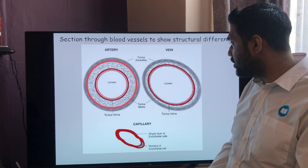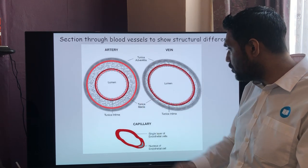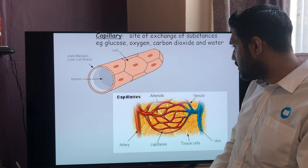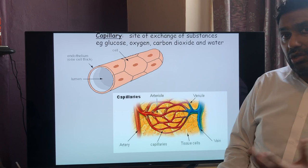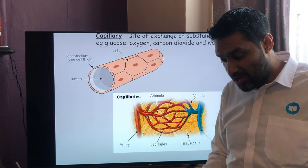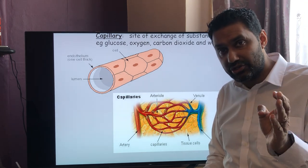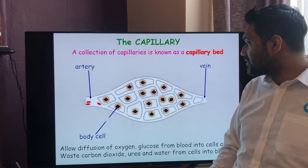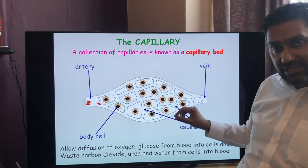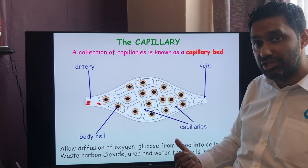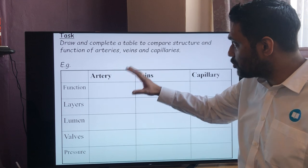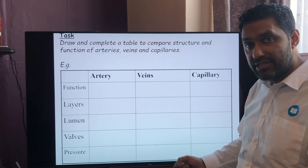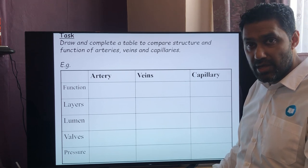In cross section you can clearly see the differences in lumen size and wall thickness between arteries, veins and capillaries. This is where exchange happens at the capillary bed. The blood comes through the arteries — we'll go into more detail in the next video looking at how diffusion exchange occurs and how we make tissue fluid. You can draw a table to summarize what you know about arteries, veins and capillaries — press pause, fill in the table, and I'll go through the answers.